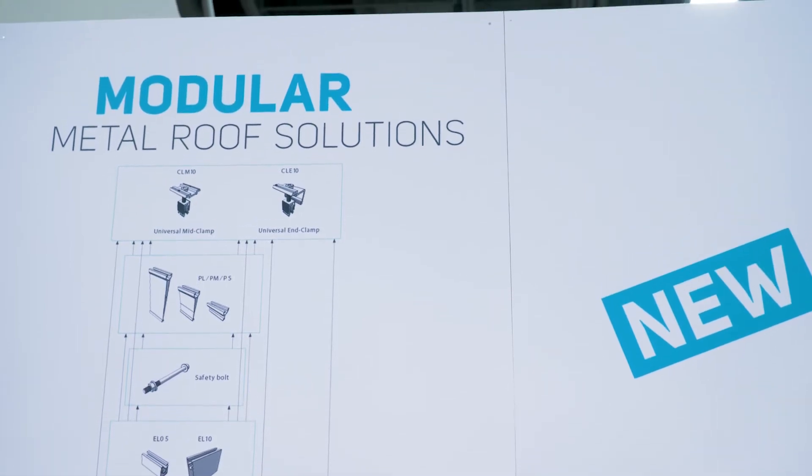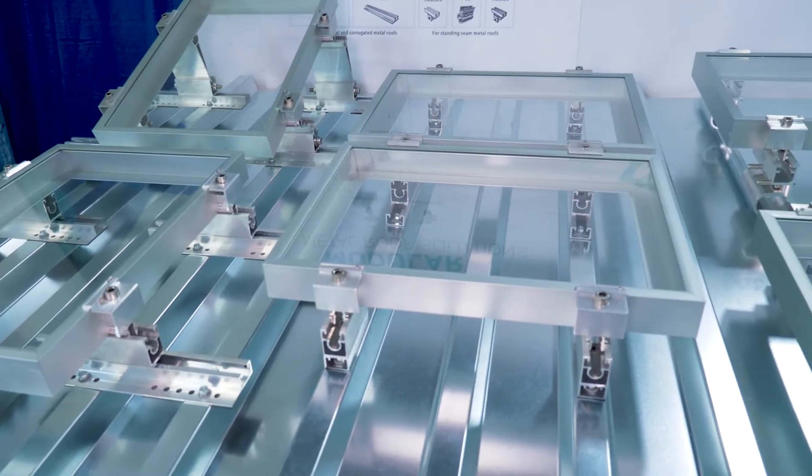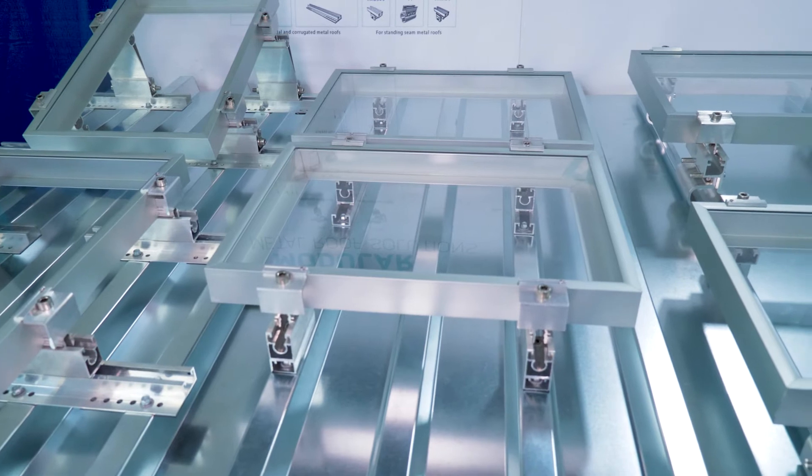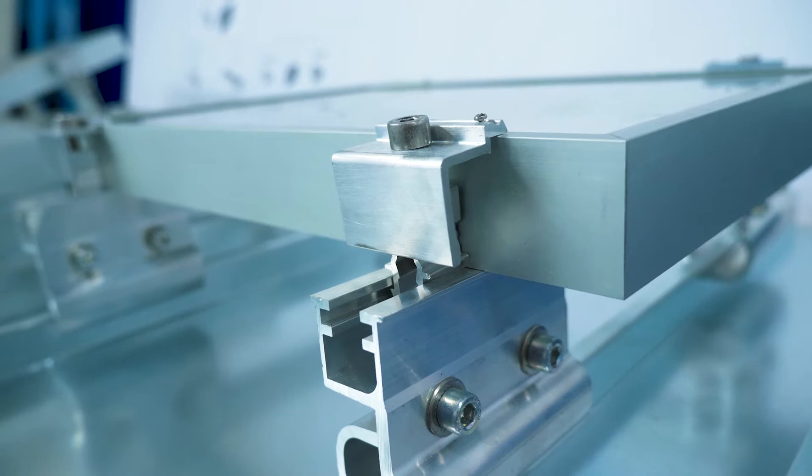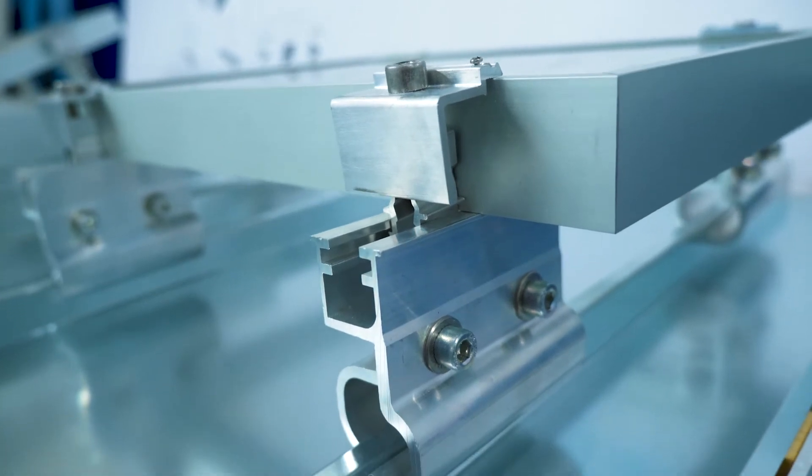We also offer our metal rooftop systems that are now modular and it's a very exciting product because it's the only product that really can compensate for the height adjustability to the metal rooftop. It's a standing seam or trapezoidal type metal sheet.